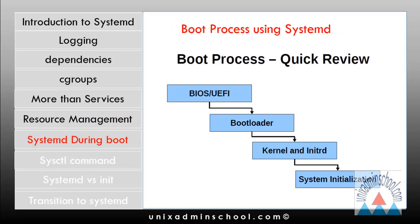Now we will see how systemd makes a difference to the Red Hat Enterprise Linux 7 boot process. When you boot a standard x86 computer to run RHEL 7, the BIOS boots from the selected medium — usually a local hard disk. The boot loader, GRUB 2, starts the Red Hat Enterprise Linux kernel and initial RAM disk (initrd). After that, the systemd process takes over to initialize the system and start all the necessary system services.